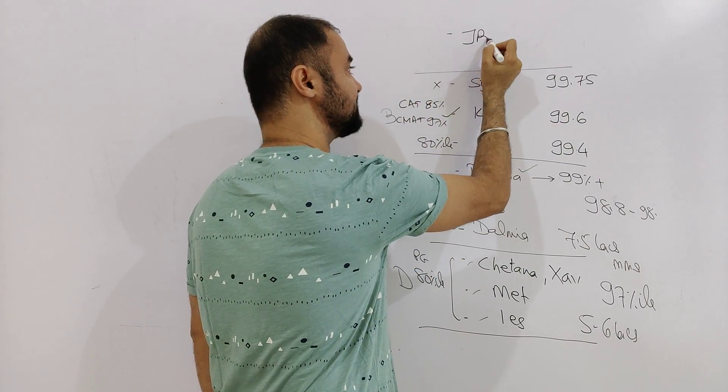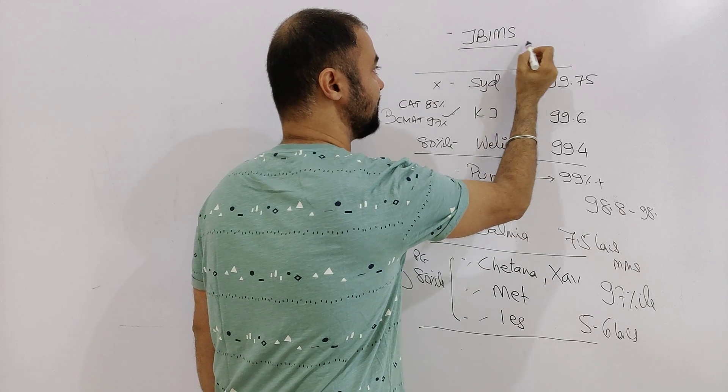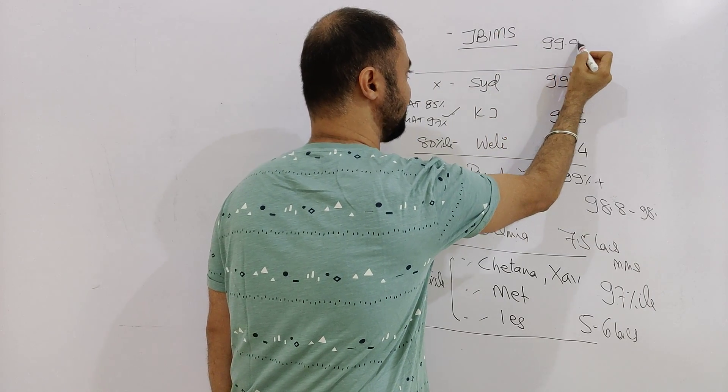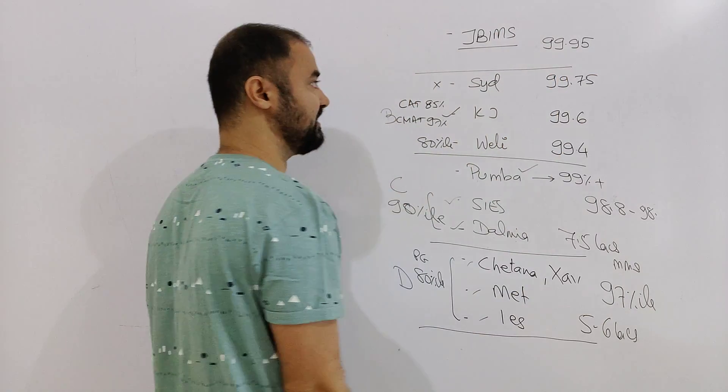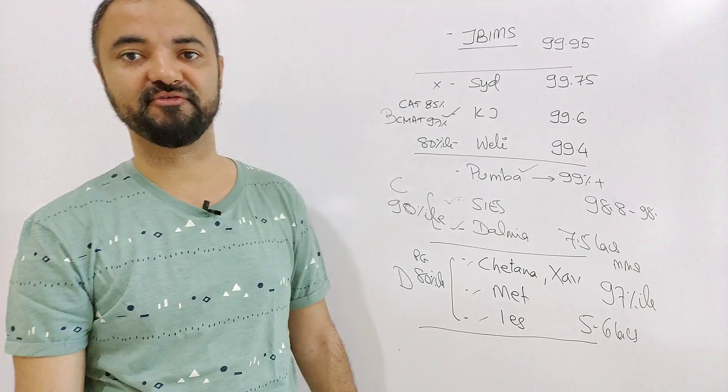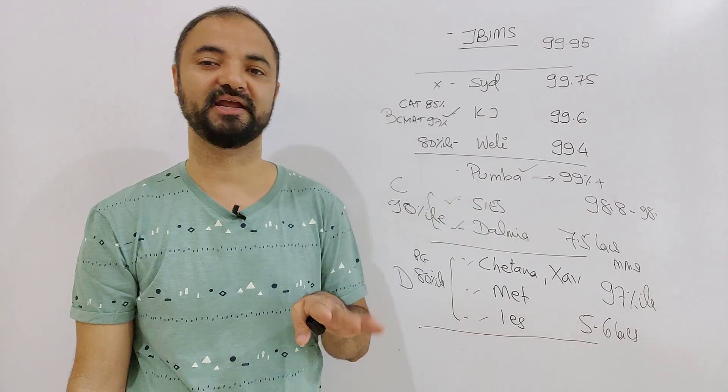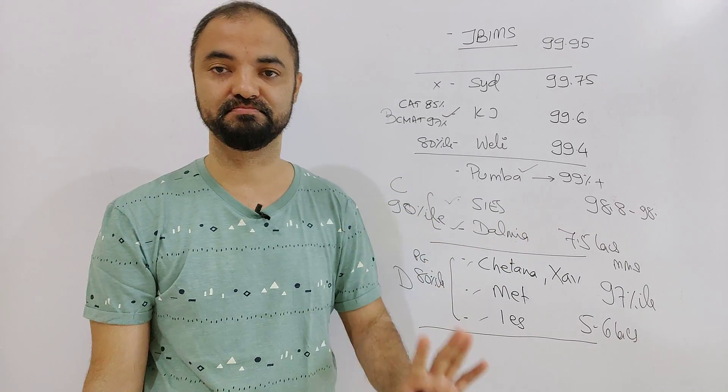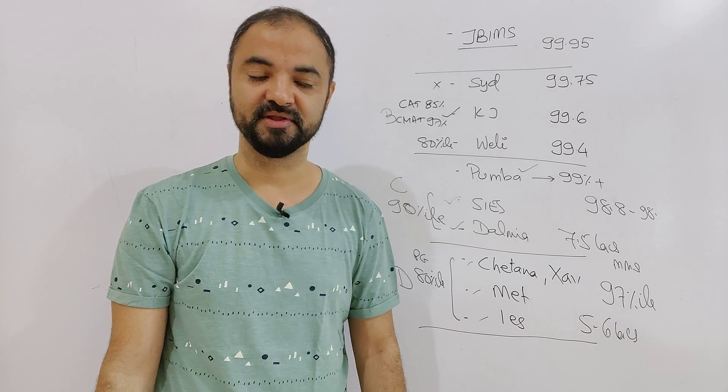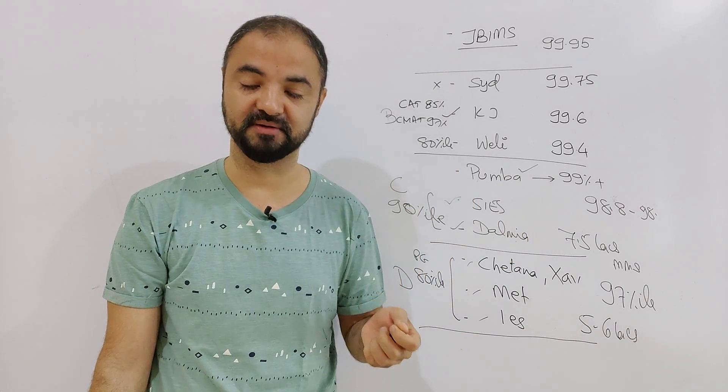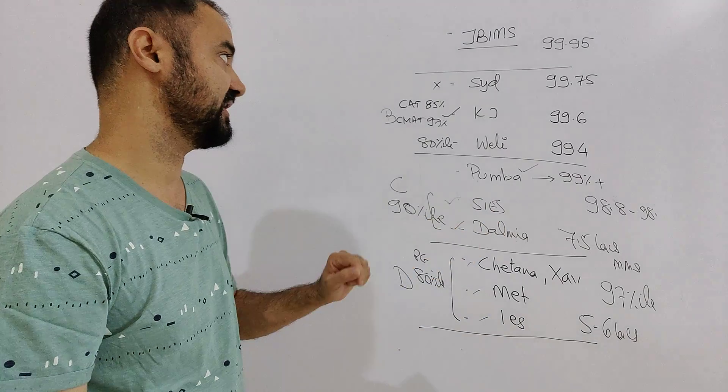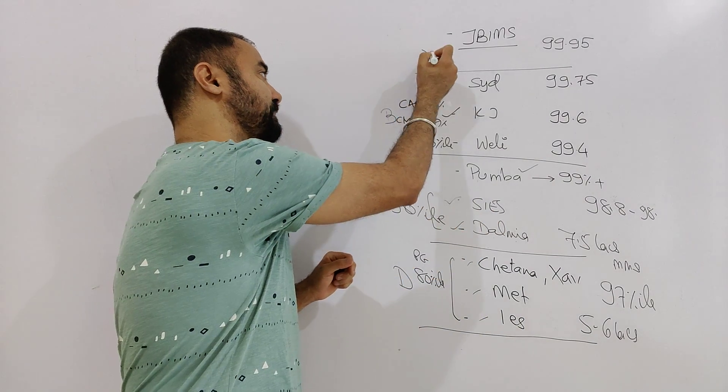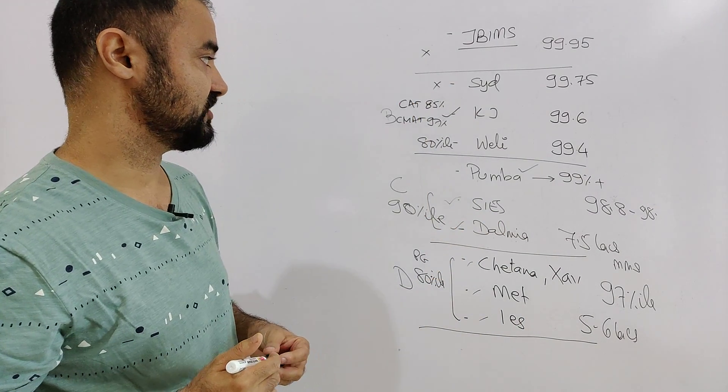And number one obviously is JBIMS, Jamnalal Bajaj. Cutoff this year will be 99.94. But I am claiming 95 because of the reservation issue. 95 plus will get it. 95 is still dicey. 96 will definitely get JBIMS. 95 might get JBIMS. For that, we need to wait for the CET matrix to come to know exactly what are the number of seats in that college. JBIMS has no PGDM program.